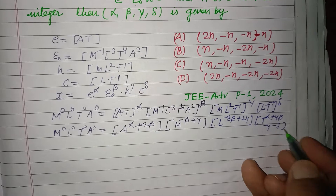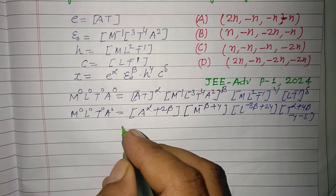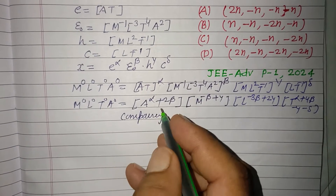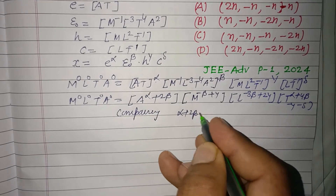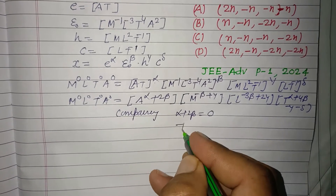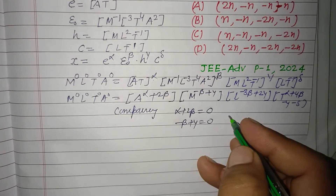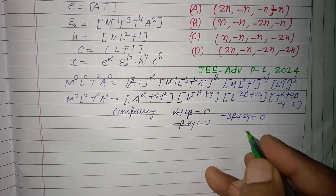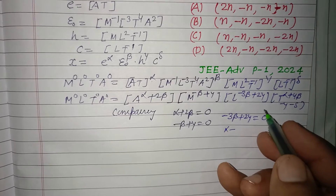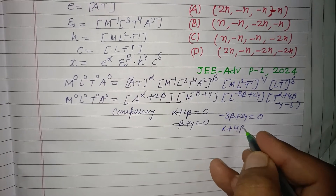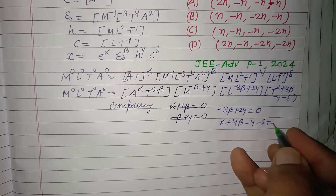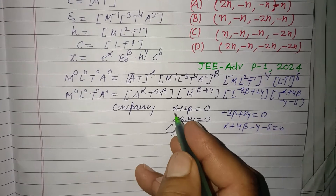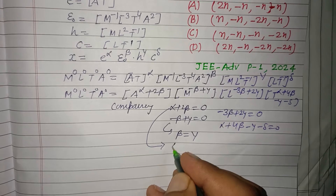Comparing exponents of the same base: alpha plus 2 beta equals zero; minus beta plus gamma equals zero; minus 3 beta plus 2 gamma equals zero; and alpha plus 4 beta minus gamma minus delta equals zero.